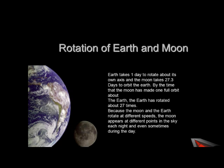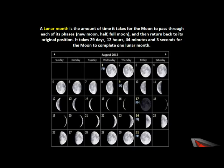Let's look at the moon's rotation. The moon rotates on its axis and revolves around the earth in an elliptical orbit at an average speed of 3,700 km per hour. The period needed for one complete rotation on its axis is 29 days, and one revolution around the earth is approximately 27 days. A lunar month is the time it takes for the moon to pass through each of its phases.